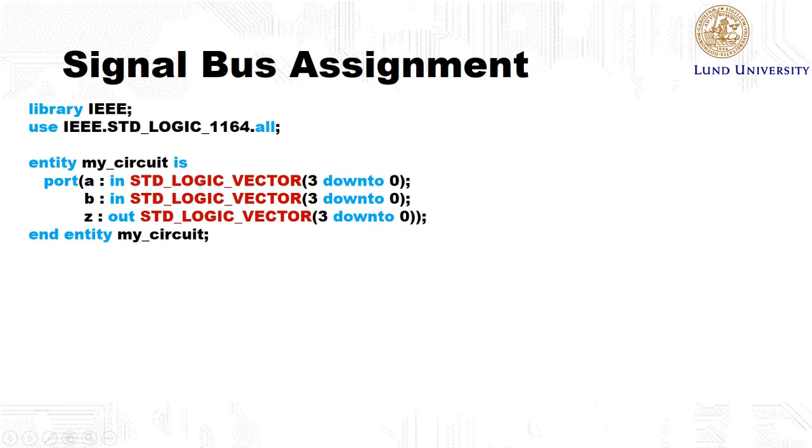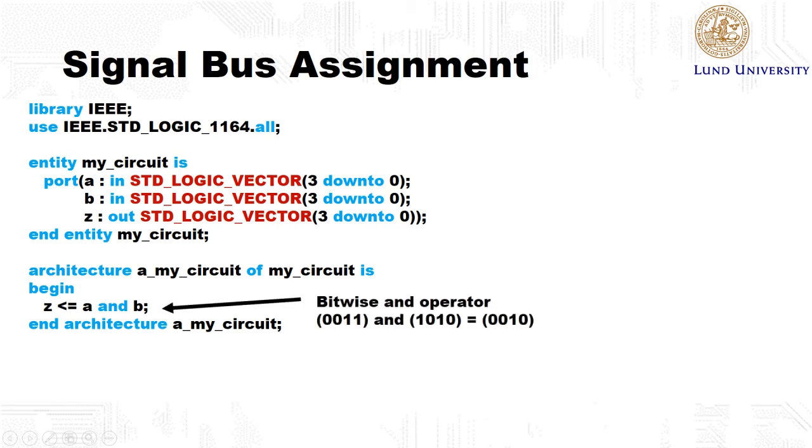As you might remember, we could use logical operators when working with the stdLogic datatype. The same goes for the stdLogicVector, so when we perform logic operations with this datatype, it is performed bitwise. So for example, if we add 0, 0, 1, 1 with 1, 0, 1, 0, the result is 0, 0, 1, 0. So we perform the AND operation bitwise between these two values.